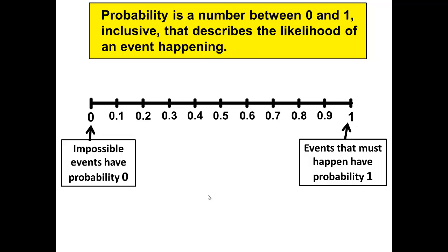Events that must happen have a probability of 1. This would be like the probability of picking a boy from a list of an all boys baseball team, or the probability of picking a day of the week that ends in Y. It's like saying there's a 100% chance of something happening.